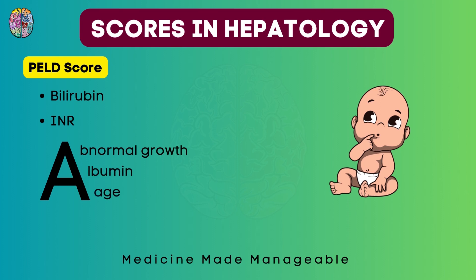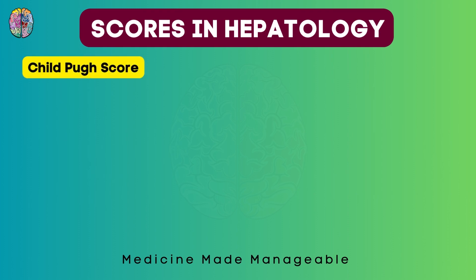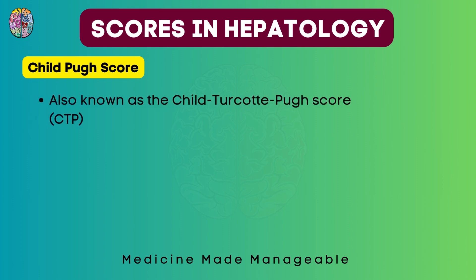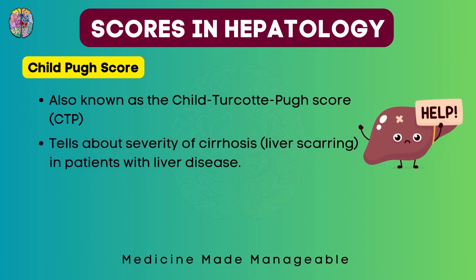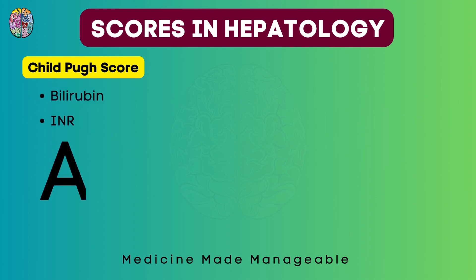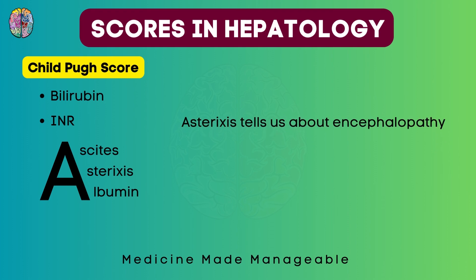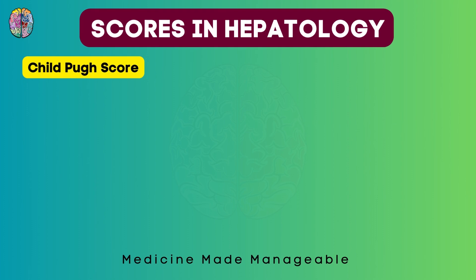The next important score is the Child-Pugh score, also known as the Child-Turcotte-Pugh score or CTP. In many medical reports you'll just see CTP, which means the Child-Pugh score. This score tells us about the severity of cirrhosis. Again bilirubin and INR are seen here. Additionally, 3 things which start with the letter A: ascites, asterixis, and albumin. Asterixis here tells us about encephalopathy — officially the components list encephalopathy, but since asterixis and encephalopathy are related, you can memorize either.